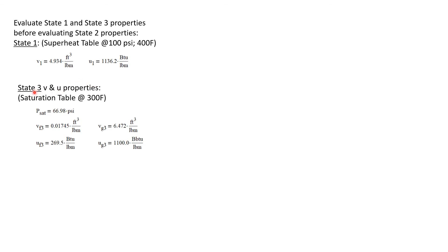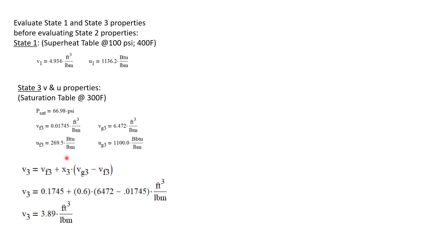Now let's find the same properties for state three. State three is a saturated mixture at 300 degrees Fahrenheit. Going to the saturation table at 300 degrees Fahrenheit, the saturation pressure is 66.98 psi. I can get values for V_f, V_g, U_f, and U_g. Since the quality of state three is 60%, the specific volume is V_f plus quality times (V_g minus V_f). Using all those values, V_3 calculates to 3.89 cubic feet per pound mass.